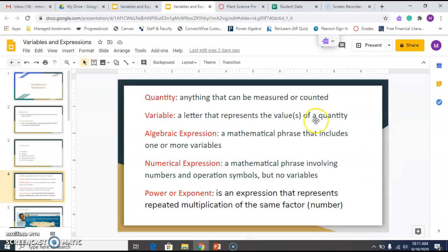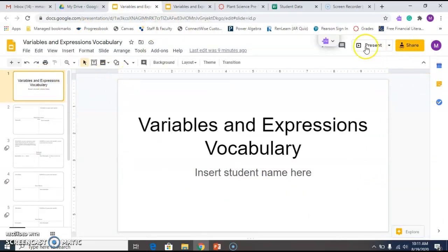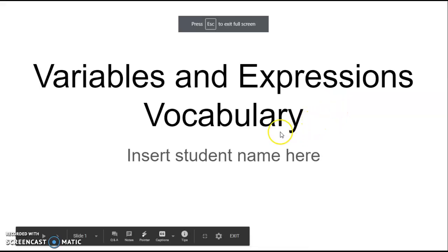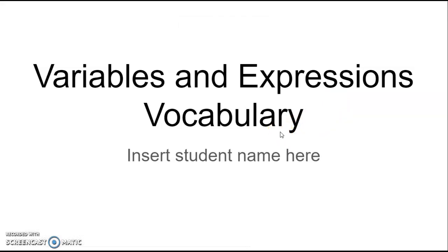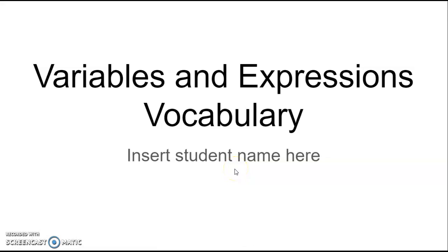So as a vocabulary exercise for this unit, what I'm asking you to do is complete this activity called variables and expressions vocabulary and each of you will be able to make a copy of this through Canvas. It'll be available under the assignments tab or the modules tab. You click on it, it'll force you to make a copy. You'll click make a copy and it'll be saved to your Google Drive using your EFCTS email.